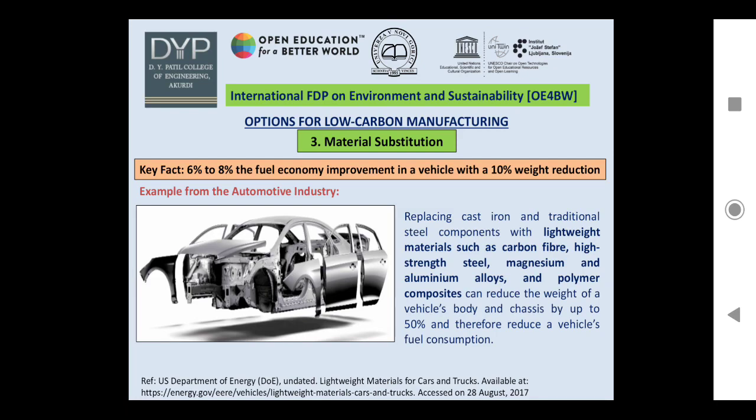Another example of material substitution is from the automotive industry. A 10% vehicle weight reduction contributes 6–8% fuel economy improvement. Replacing cast iron and traditional steel components with lightweight materials such as carbon fibers, high-strength steel, magnesium, and aluminum alloys — including polymer composites — can reduce the weight of a vehicle's body and chassis by up to 50%, thereby reducing overall fuel consumption.